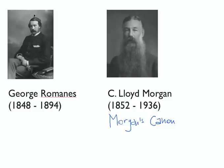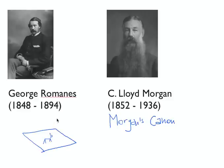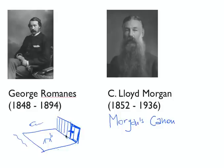Morgan suggested a very illustrative example to describe his canon, which came from him having a dog. He had a garden with a fence that had a door, and the door had a latch. On the other side of the fence was a street with passersby. The dog, like many dogs, wanted to get out.